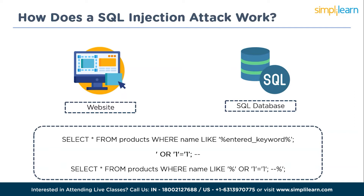As a result, the modified query effectively retrieves all products from the database, regardless of the keyword, since the condition 1=1 is always true. This example demonstrates how an attacker can exploit a vulnerable SQL injection point to modify a query's logic and retrieve unintended data. Real-world SQL injection attacks can be more sophisticated, so it's crucial to secure web applications against these vulnerabilities to prevent unauthorized access and data breaches.